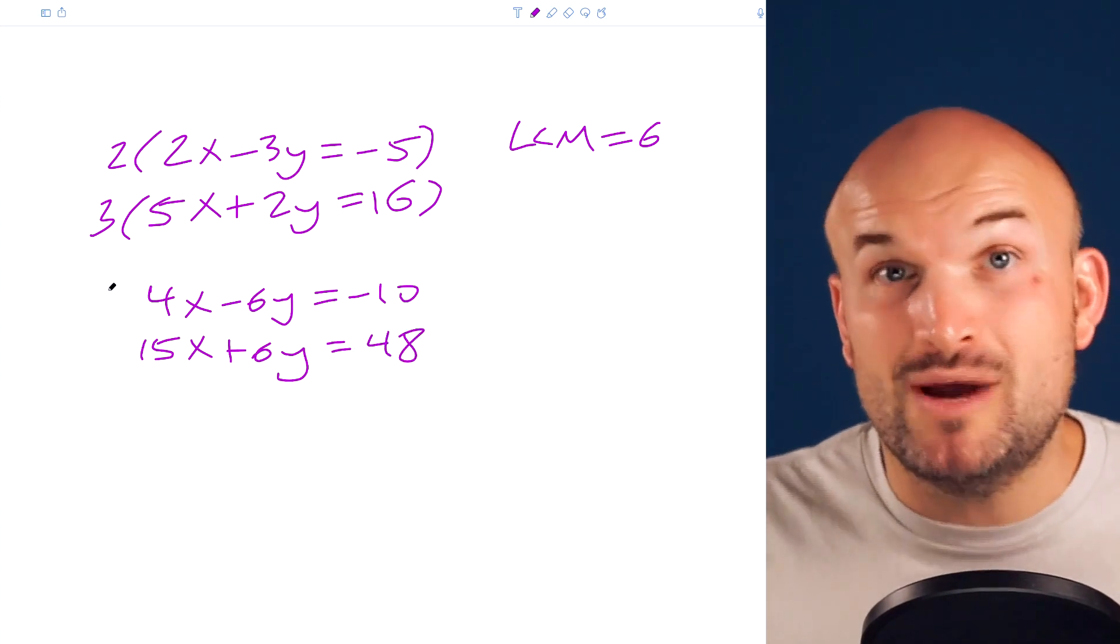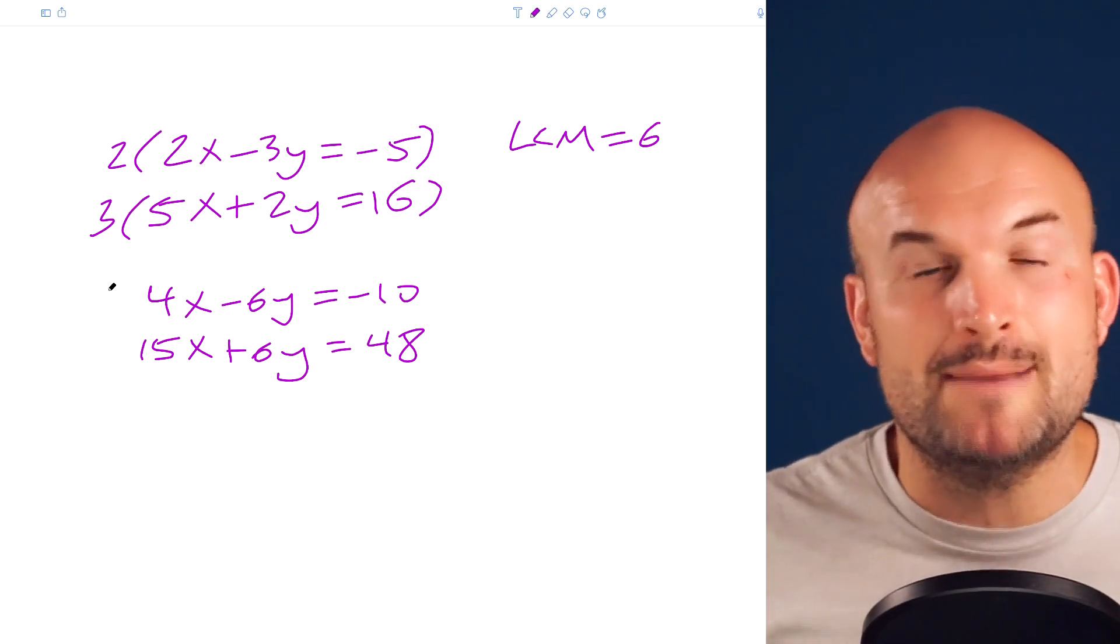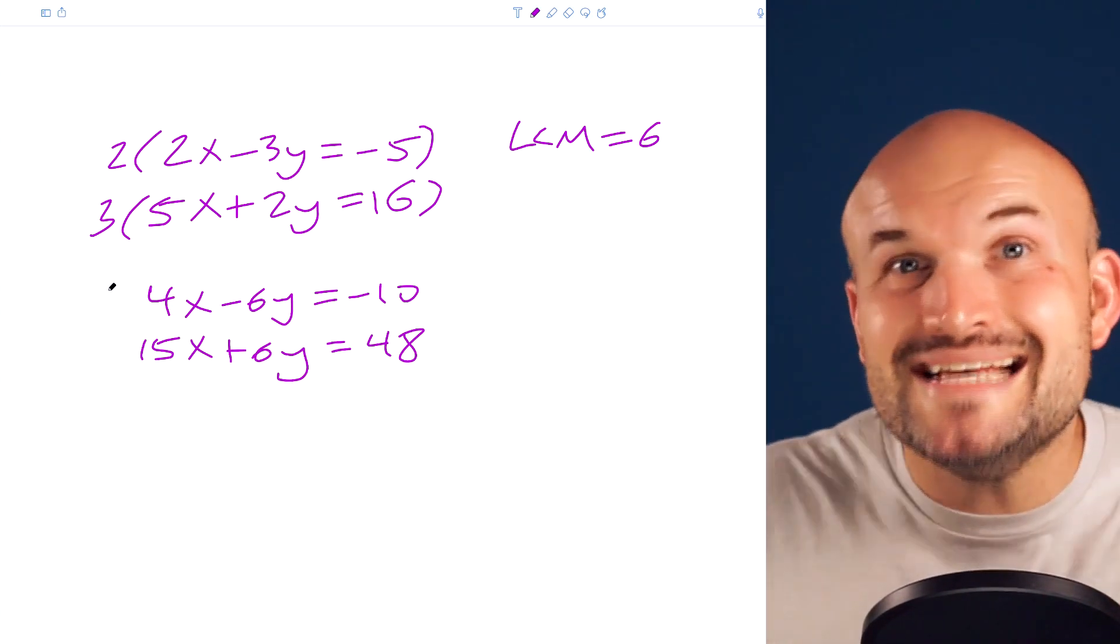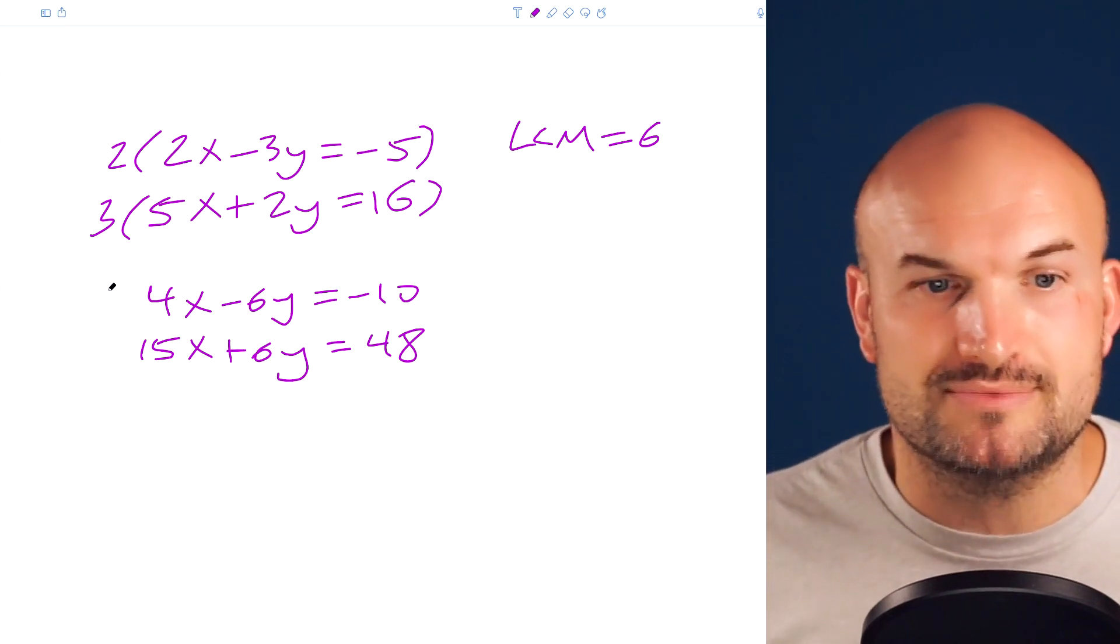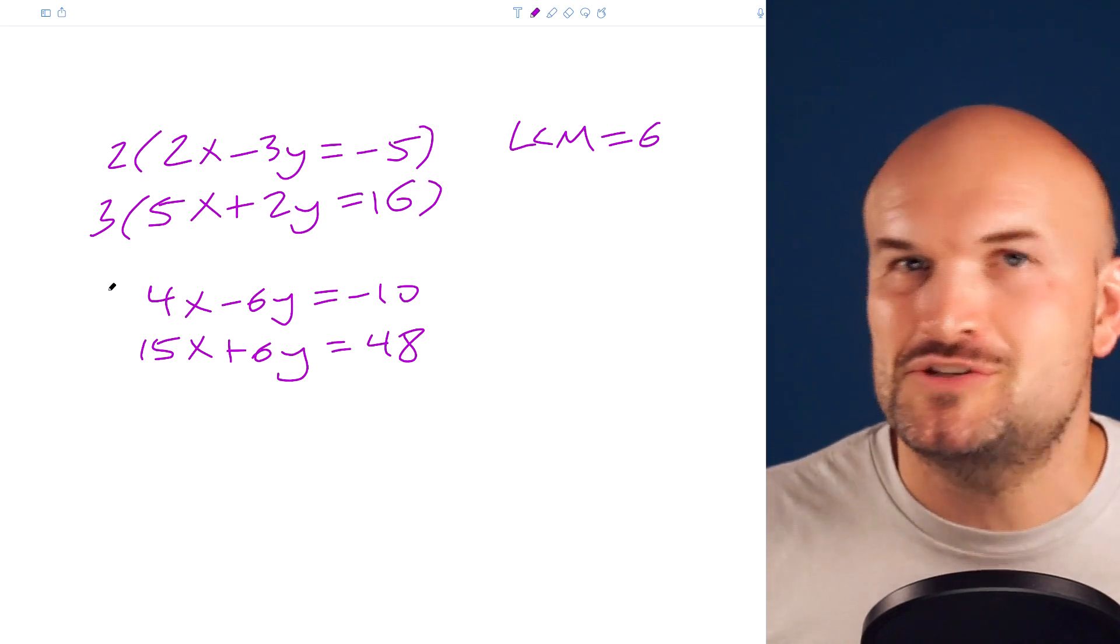Now again, these are equivalent equations to my original system. So we're not changing the solution. All we're doing is we're multiplying it by a larger scalar that's going to make it easy for us to eliminate our variables. If you miss this mistake, you're not going to create an equivalent equation and therefore your solution will be wrong.